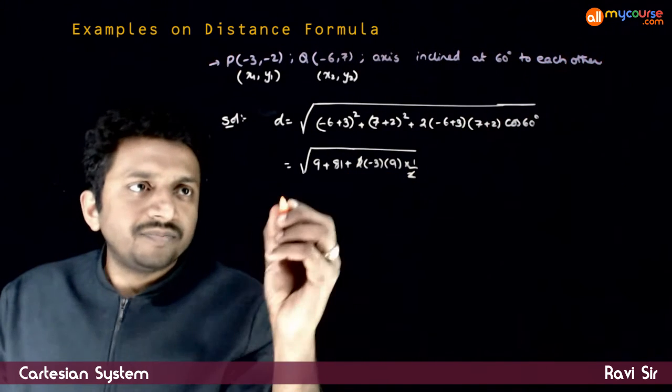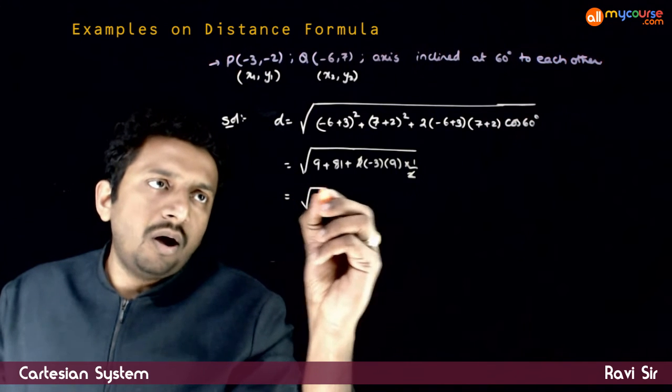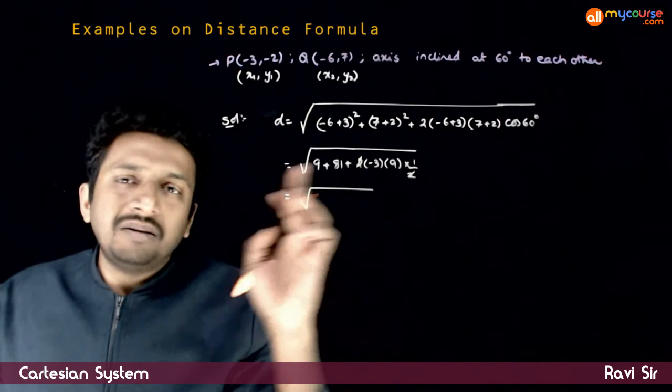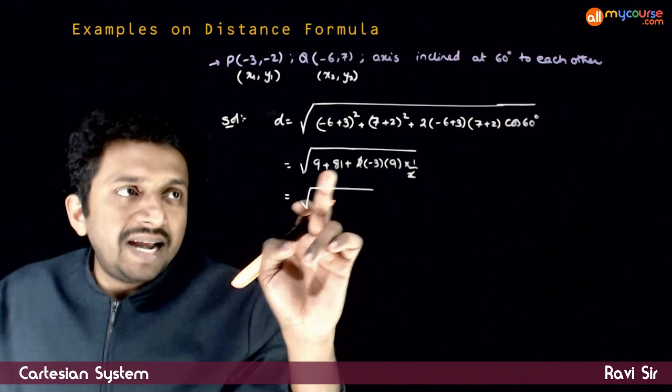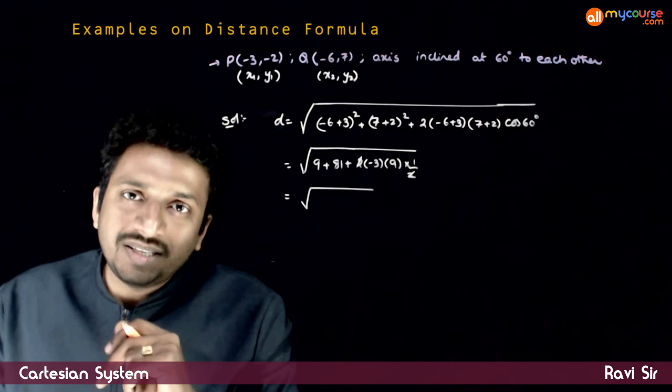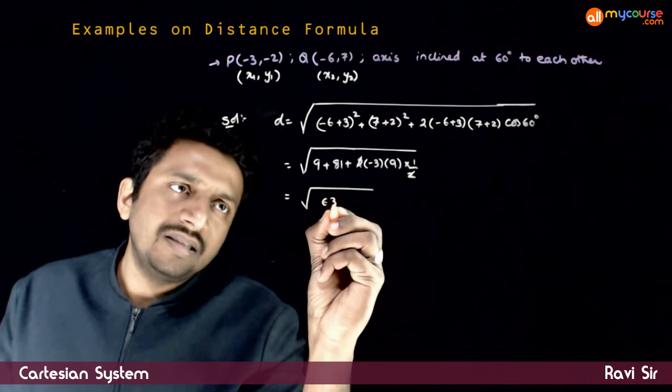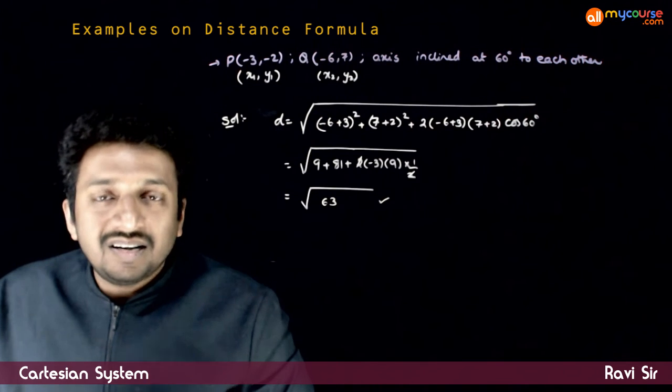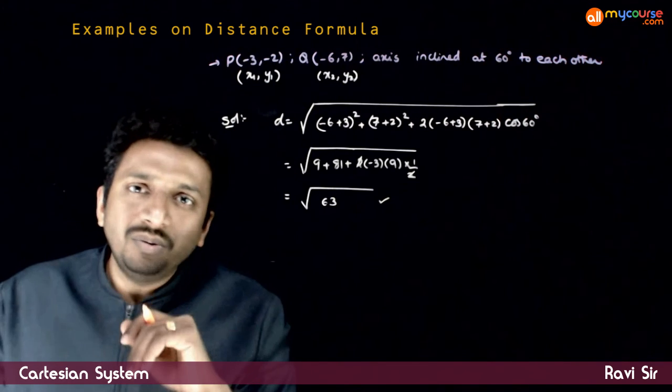This 2 and 2 gets cancelled. So root of: 81 plus 9 minus 27. 90 minus 27 is 63. Root 63 is the distance between these two points.